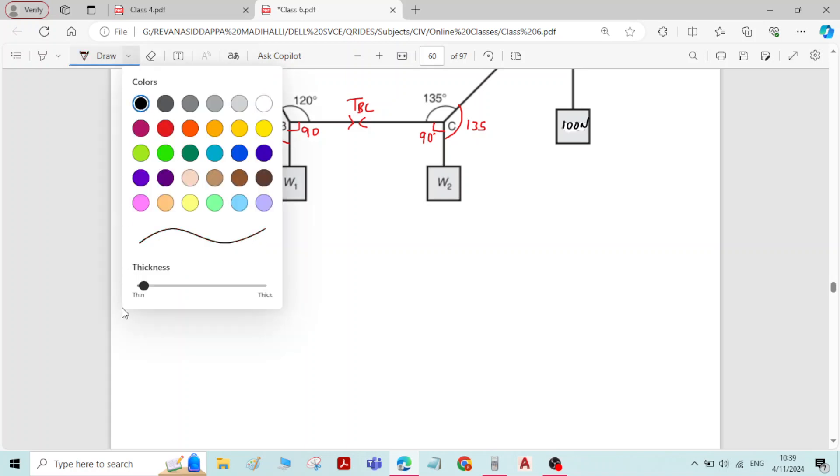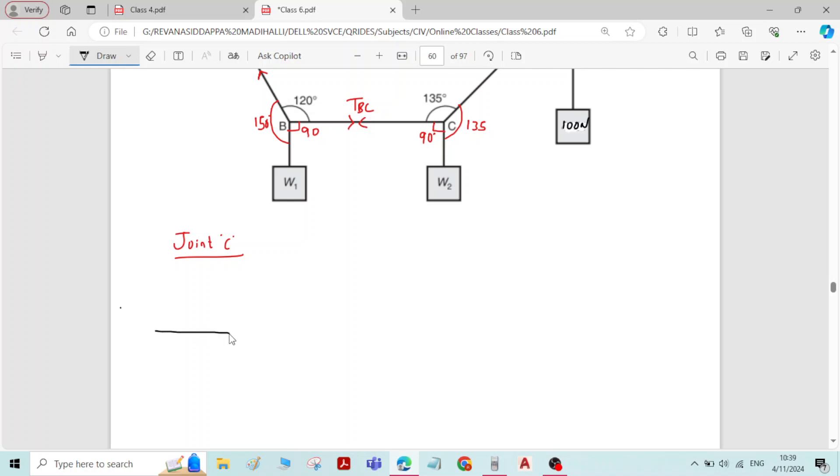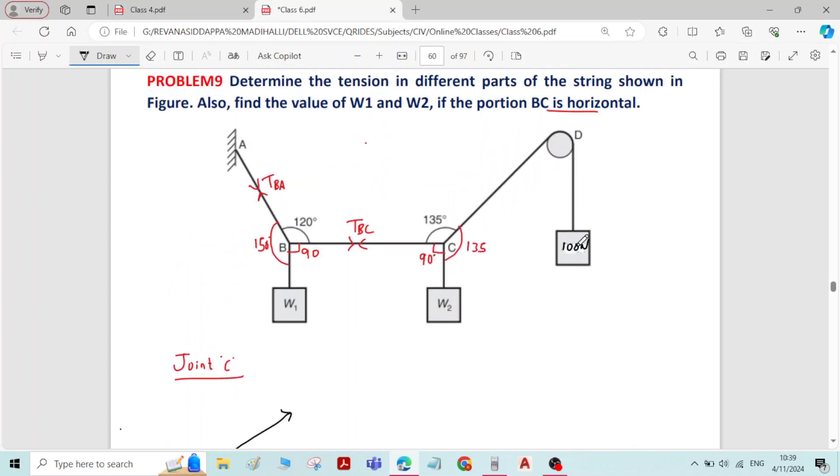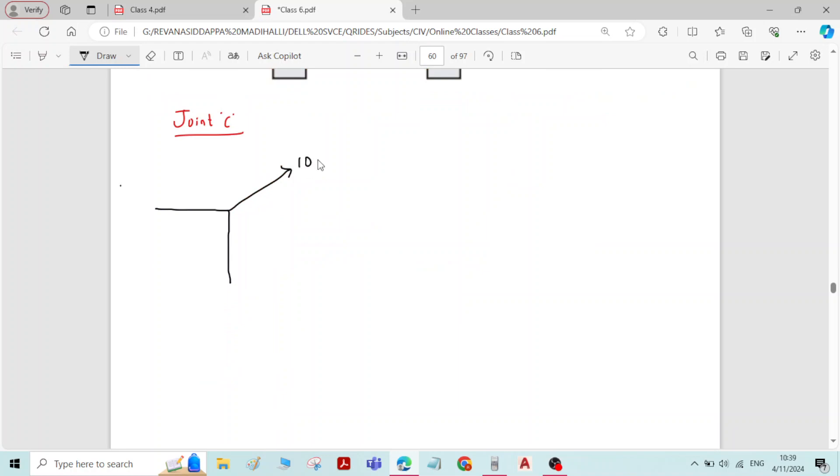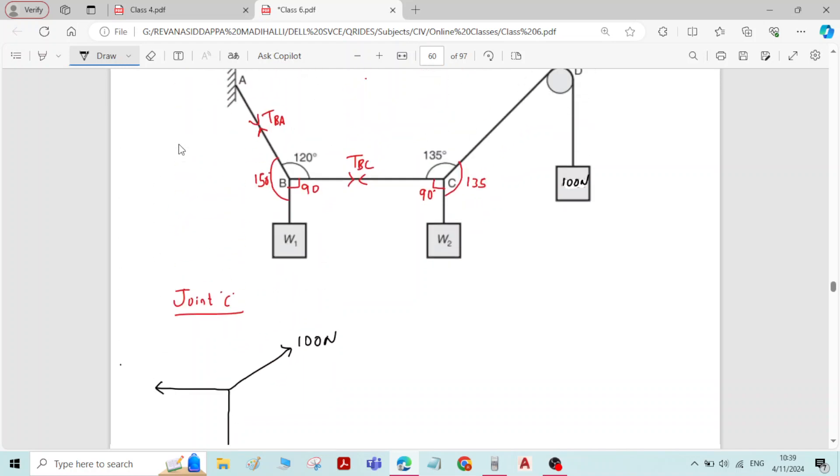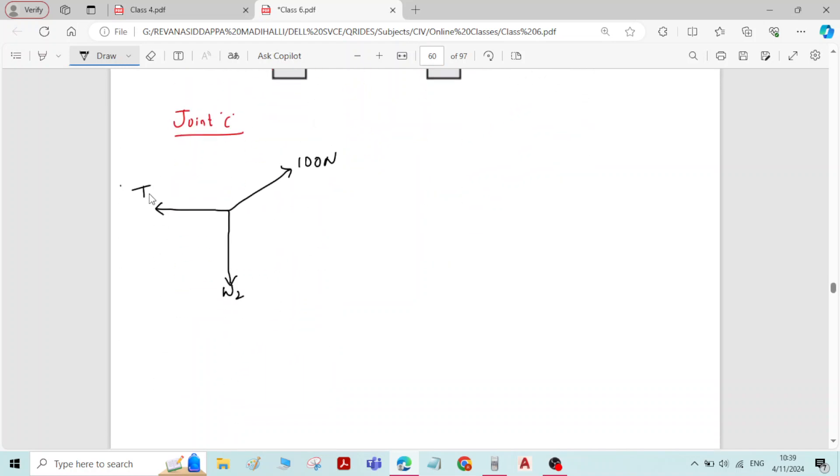I will get the figure of joint C alone. So force in member CD is 100 Newton, and here we have unknown force of W2. So here we have unknown force of TBC. TBC angles are here 90, 135 and 135.